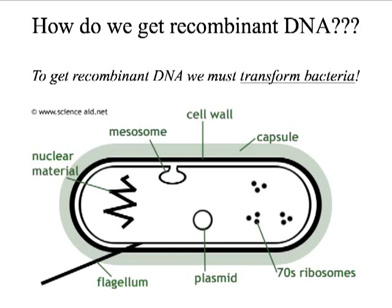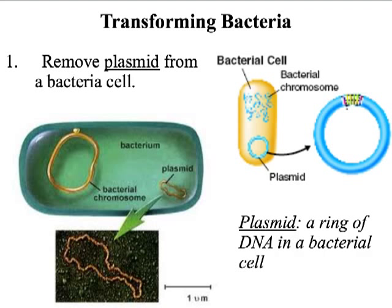In order to get recombinant DNA, we have to transform bacteria. Recombinant DNA is DNA that has DNA from different organisms in it. When we're trying to make recombinant DNA in bacteria, we have to go through this process called transforming. The first step is you're going to remove a plasmid from the bacteria cell. Bacteria cells have this little piece of round DNA called a plasmid, which is easy for us to remove, cut open, and stick some extra DNA in it.